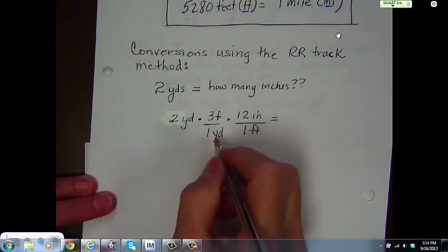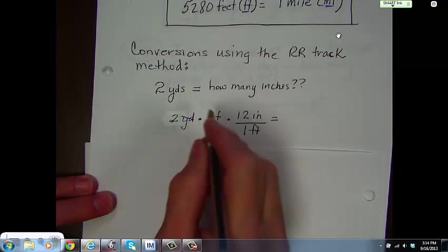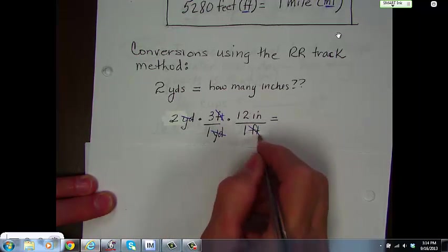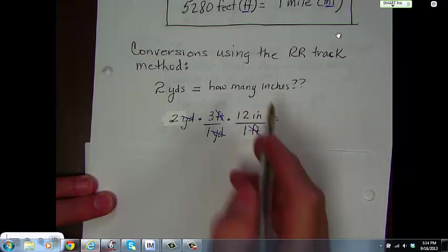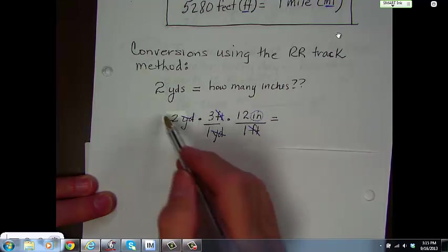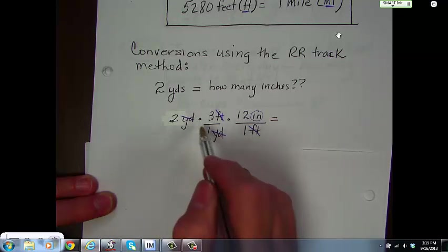How can we figure out how many inches? Well, you have yards in the top and yards in the bottom, so we can actually cross those out. If you have feet in the top and feet in the bottom, you can cross those out. All you have left is inches, which is exactly what we were looking for. When you set this up, you have to remember to vary. If you have yards here, then your next step should have yards in the bottom, so that you'll be able to cross them out.